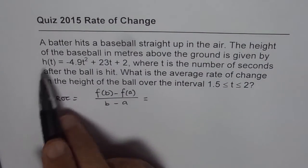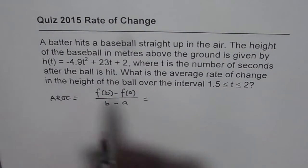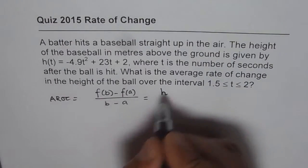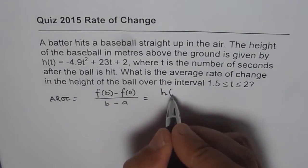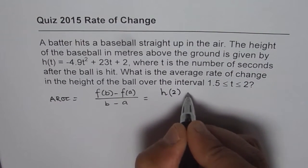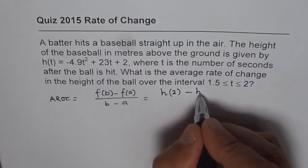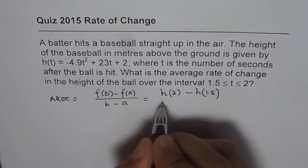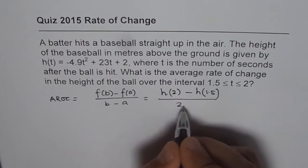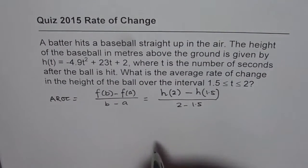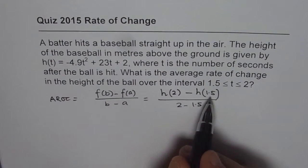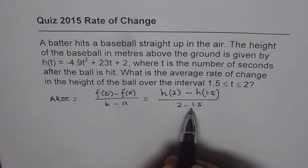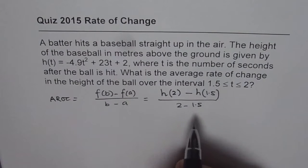You can substitute these values and find the answer. Basically, you have to calculate the height of this ball when t is 2 seconds, then the height when t is 1.5 seconds, and divide by 2 minus 1.5. I prefer you do these calculations separately, substitute the values, and then find the answer.